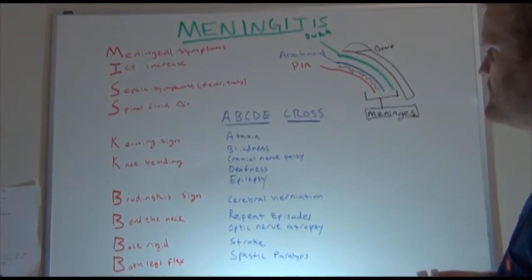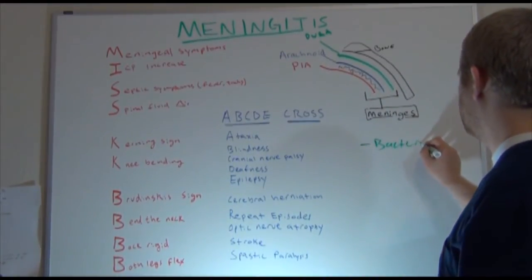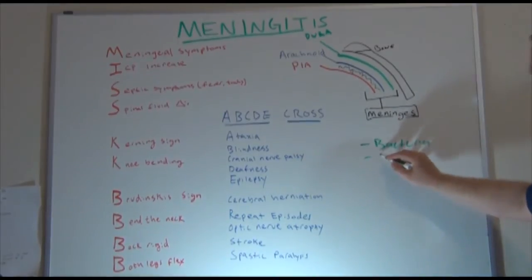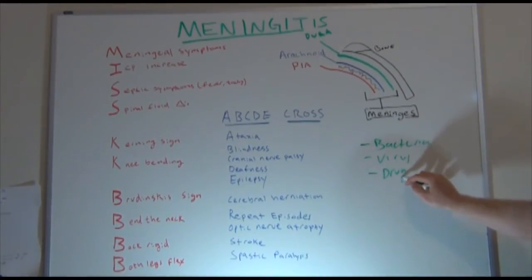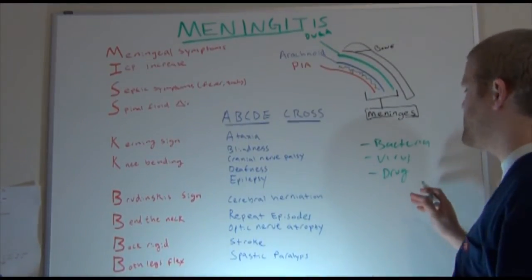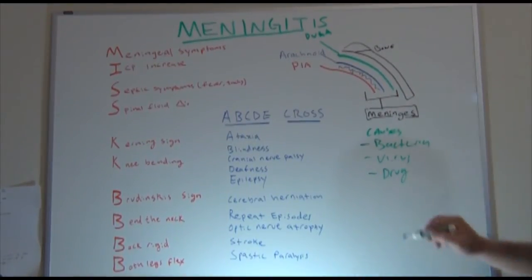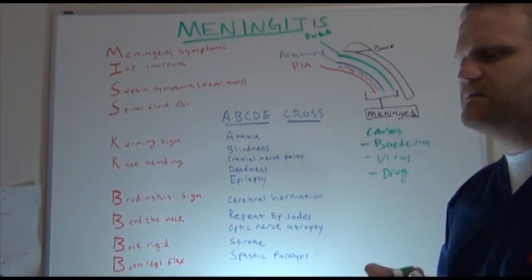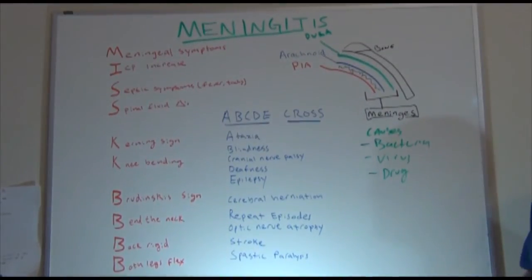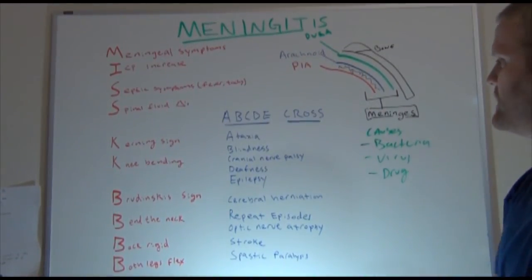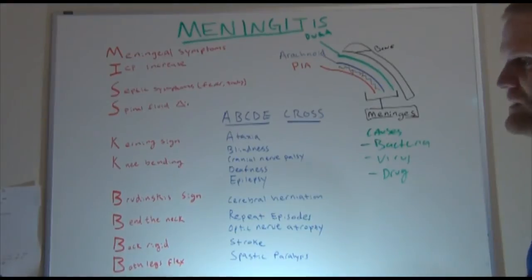That inflammation can be due to a few different things. The main causes are going to be bacteria, virus, and drugs — different drugs that we give people or that people can take can actually lead to meningitis. Those are the main three causes. The things we'll need to mostly be concerned about as nurses are what are the signs and symptoms of meningitis, and how can we recognize it in the patient. We do have a couple different mnemonics to help with that.